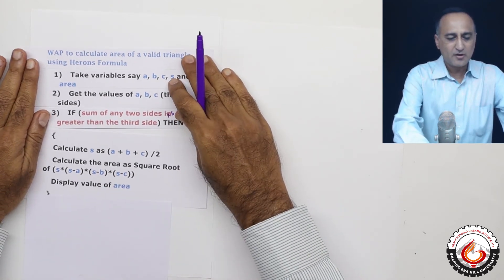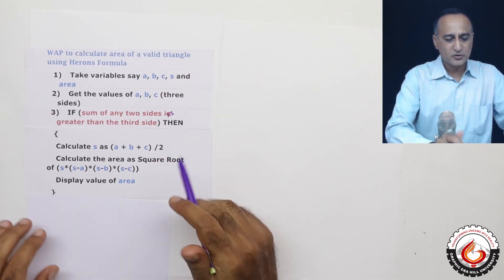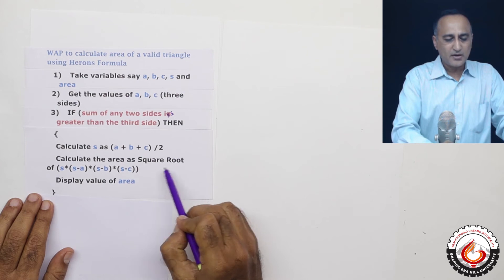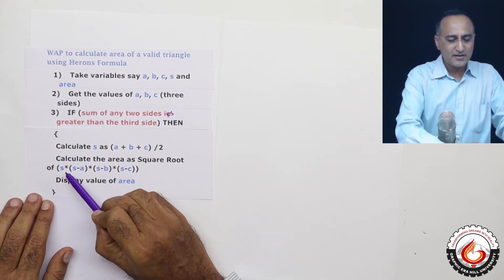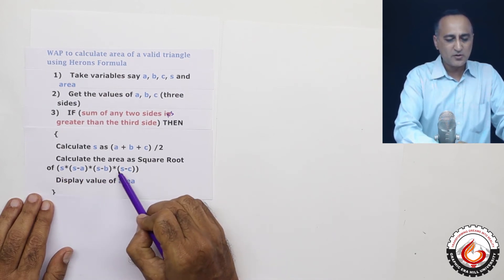So this is how you are going to get the area of a triangle. So it's going to say calculate the area as square root of S into S minus A, S minus B into S minus C.